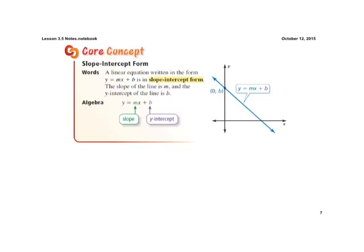M is our slope, B is our Y intercept. Remember, Y intercept is where it crosses the Y axis. So again, M is our slope, B is our Y intercept. Those are the two things we want to pick out from this form.